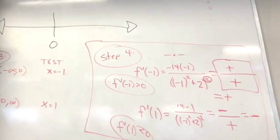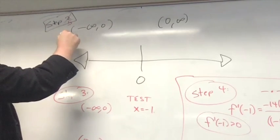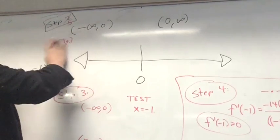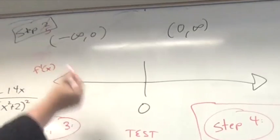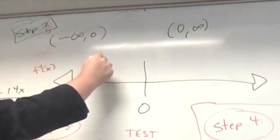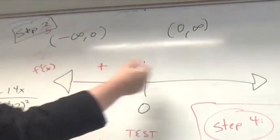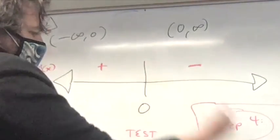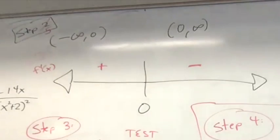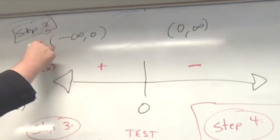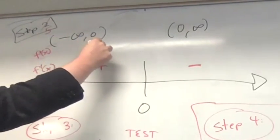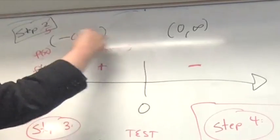So now we can kind of turn step two into step five because we know we can look at f prime of x and we can say, well, f prime of x is positive on this interval, negative on this interval, because I use these test points that were from these intervals. And so f of x is increasing on this interval and decreasing on this interval.